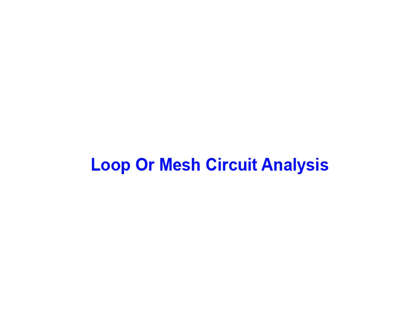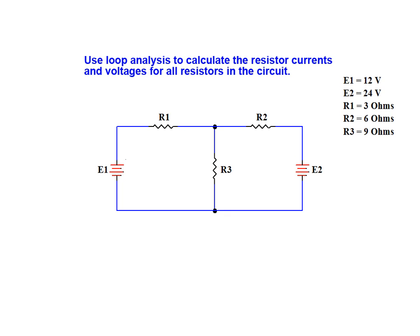This animation is intended to illustrate the steps required to perform a loop or mesh circuit analysis on a resistive DC network. We will be using loop analysis to calculate the resistor currents and voltages for all resistors in this simple circuit.